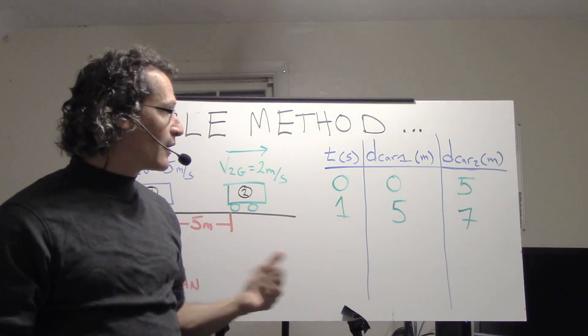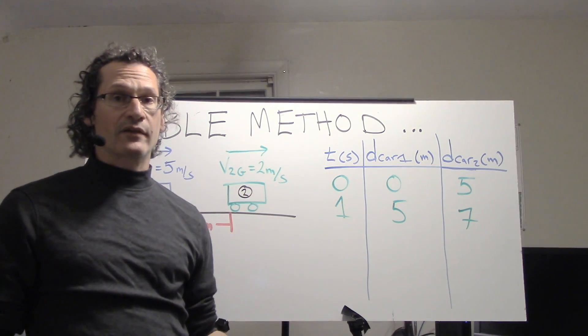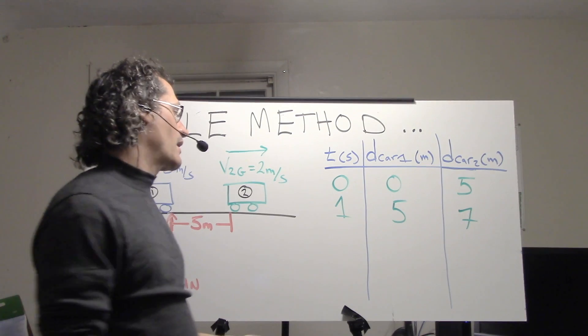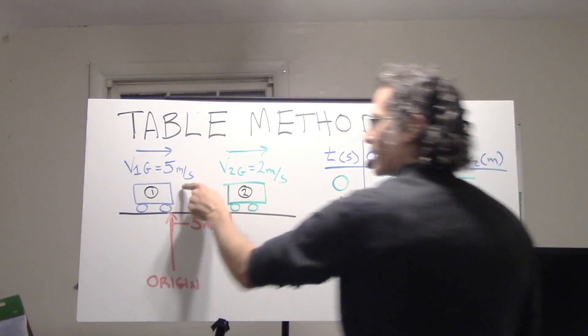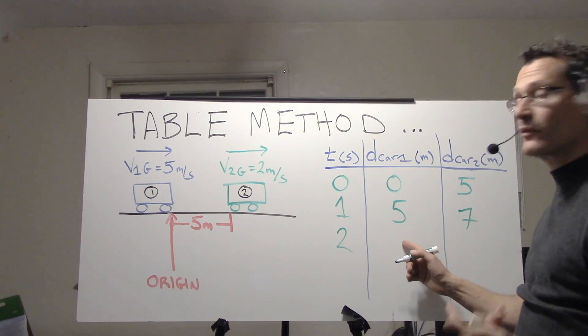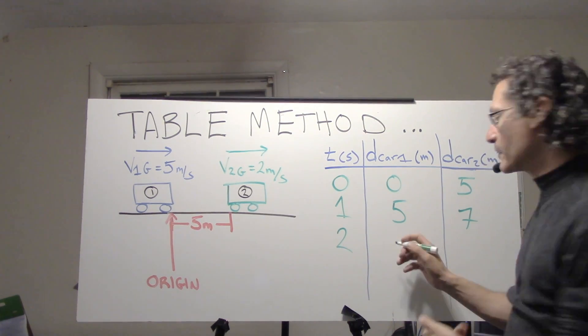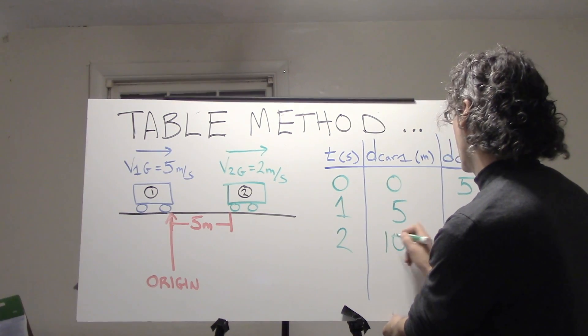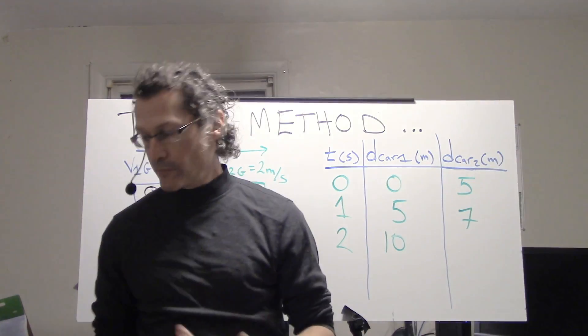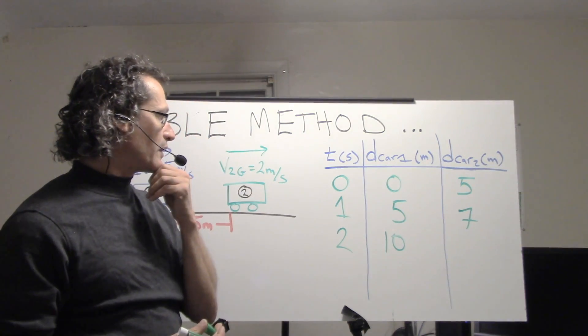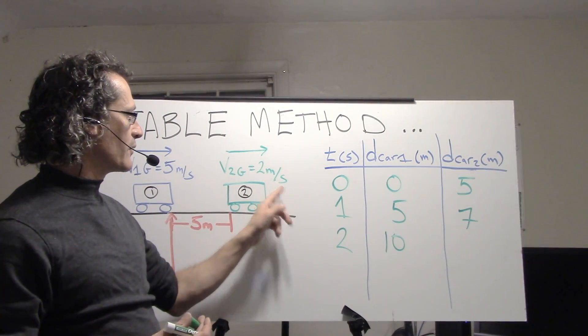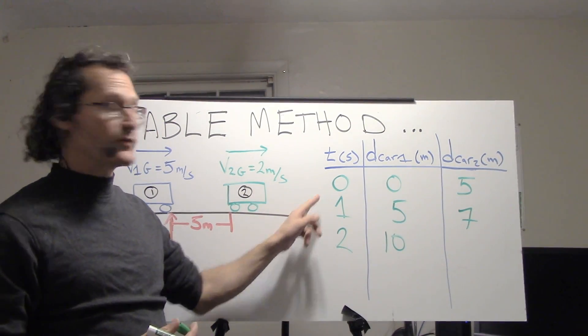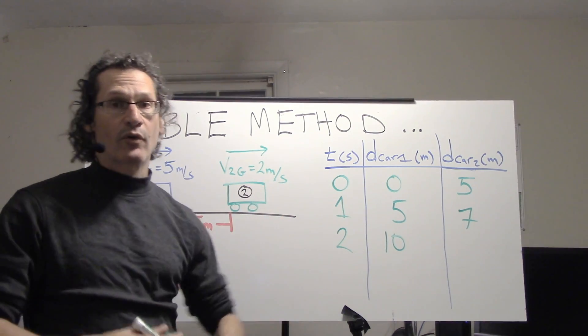What about t equals two seconds? At t equals two seconds, car one, which is moving at five meters per second, will now be at a displacement of ten meters. What of car two? Car two started at five. We have two seconds of travel at two meters per second—that's four—so we're looking at nine.